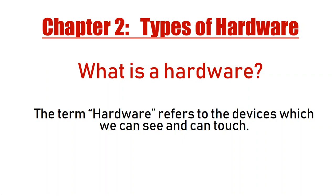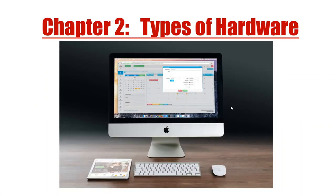We have heard the word hardware very often, and you might have come across the definition of hardware. So what is hardware? The standard answer we get is that hardware refers to the devices which we can see and can touch. So hardware is basically the machine we refer to in computers — this is a computer in front of you, and this is hardware. You can touch this computer, you can lift it from one place to another.